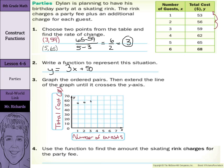5, 65, and 6, 68. As we draw a line until it crosses the y axis, going through those points.